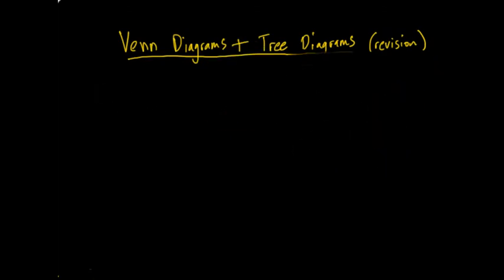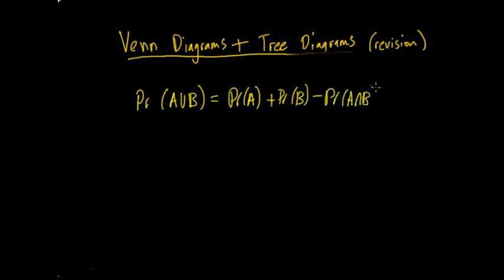Now, another rule that I mentioned before is the probability of A union B, equals the probability of A, plus the probability of B, minus the probability of A intersection B. Now, you should logically think, why is that the case? But, you can also see on a Venn diagram. If we have A here, and if we have B here, let's draw it a bit better, and B there.